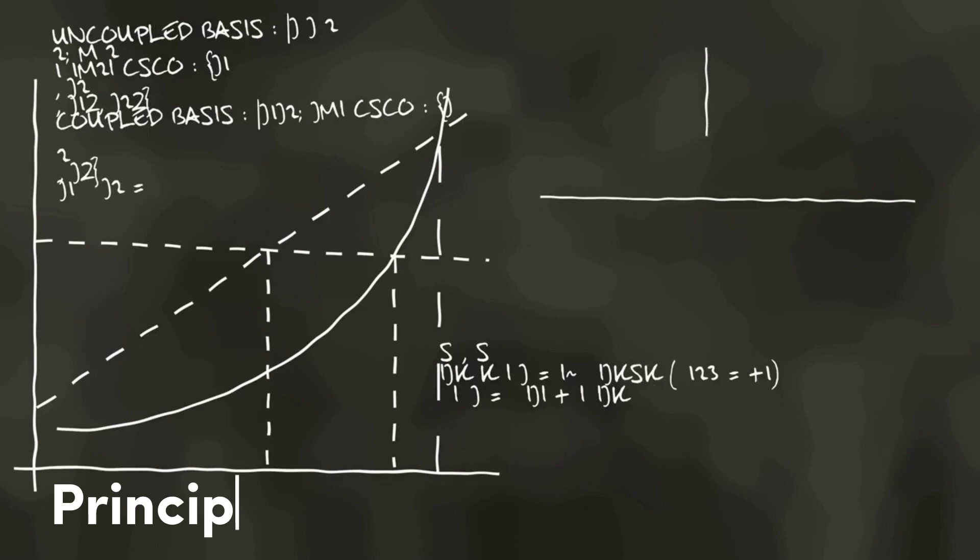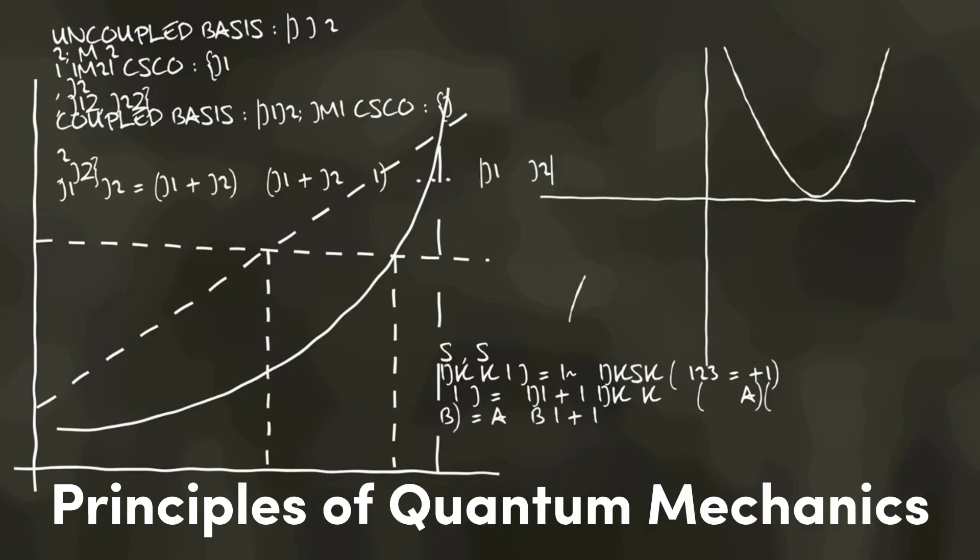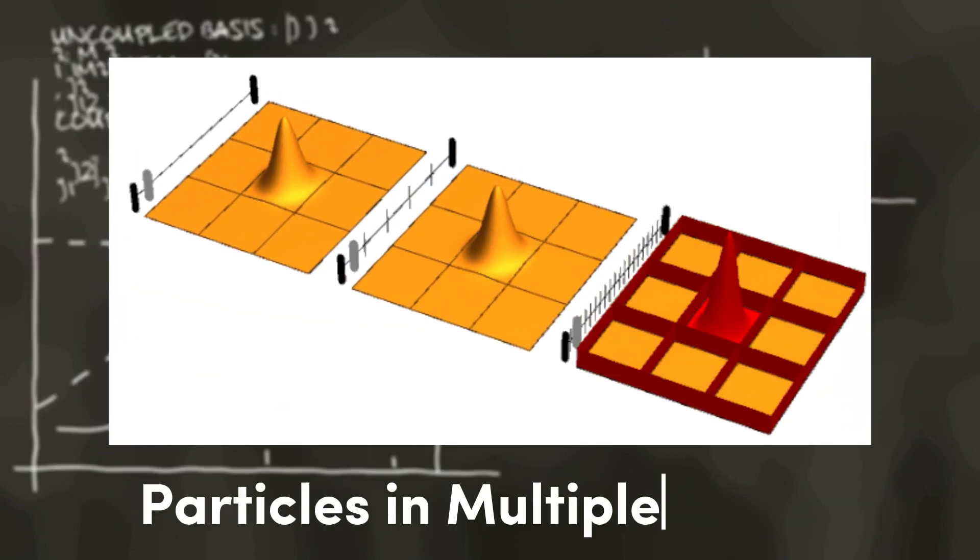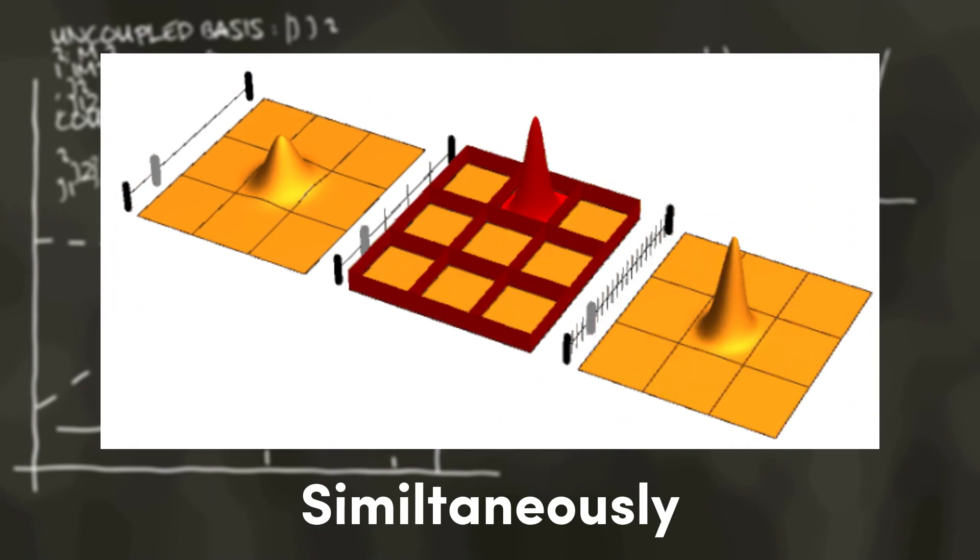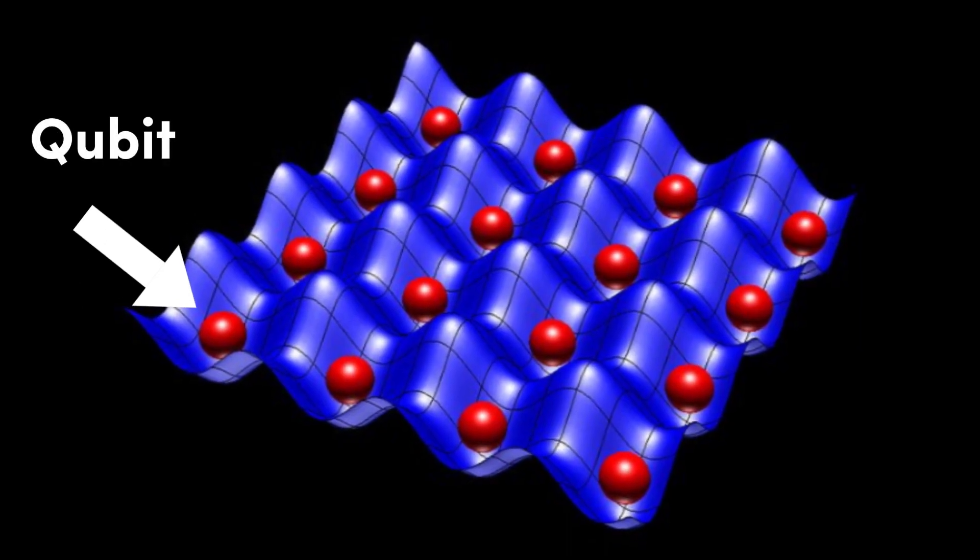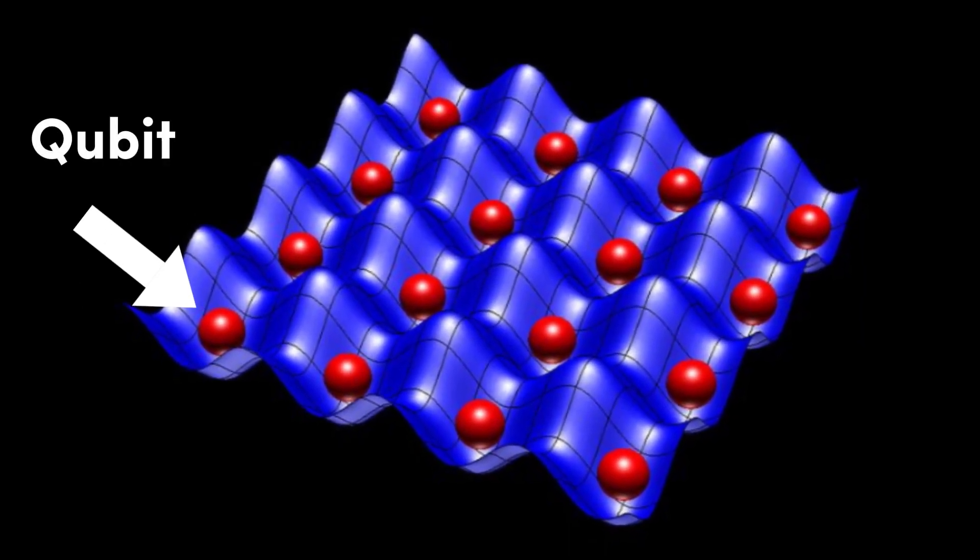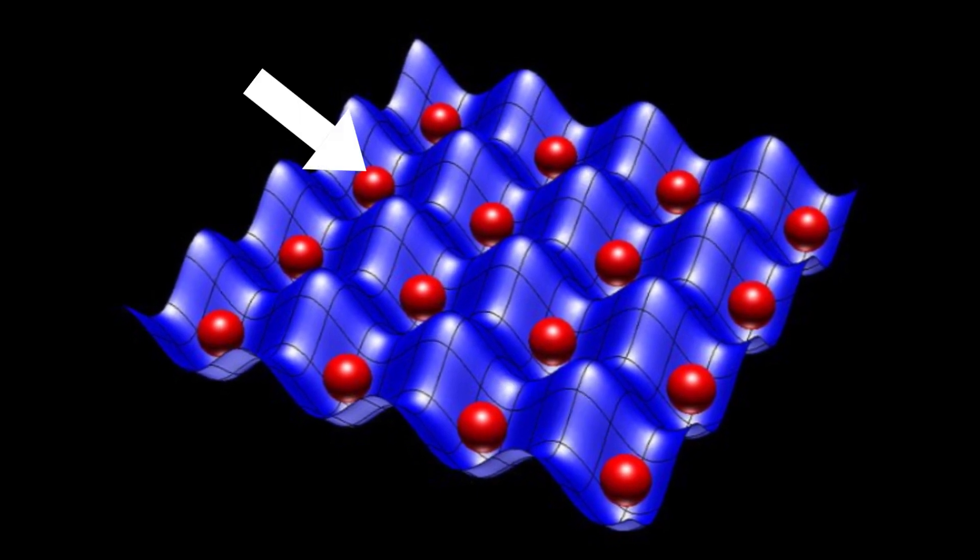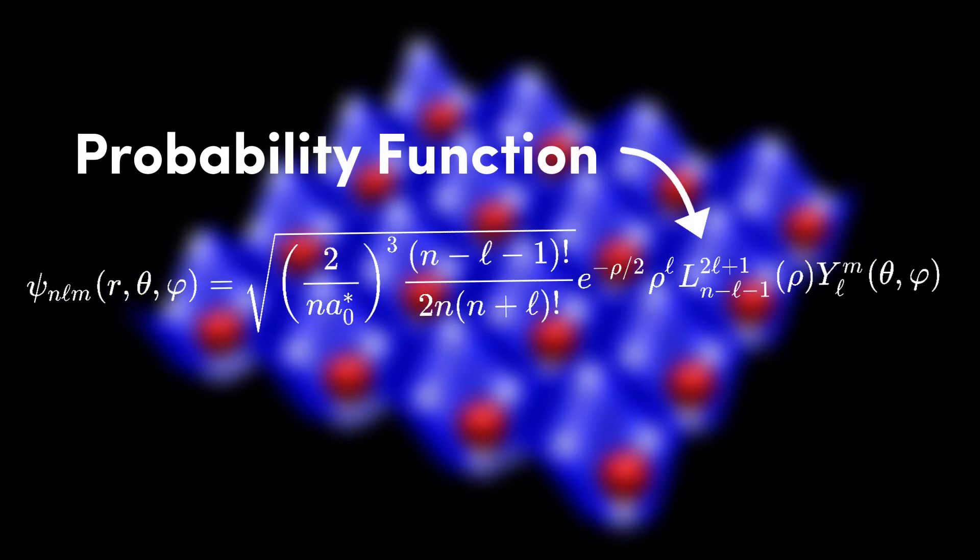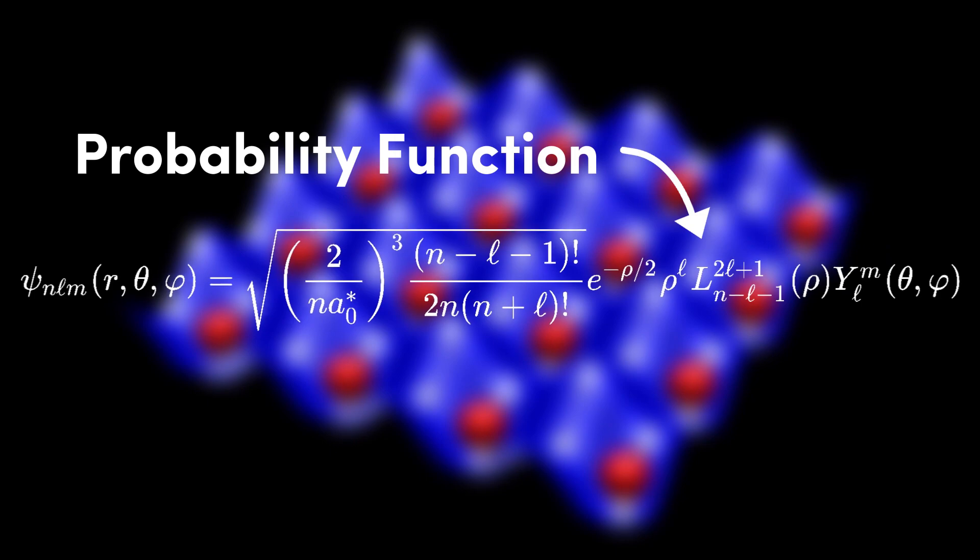Quantum computing is based on the principles of quantum mechanics, which allows particles to exist in multiple states simultaneously. A qubit is the basic unit of quantum information and can exist in a superposition of states, where the probability of each state is represented by a complex number.